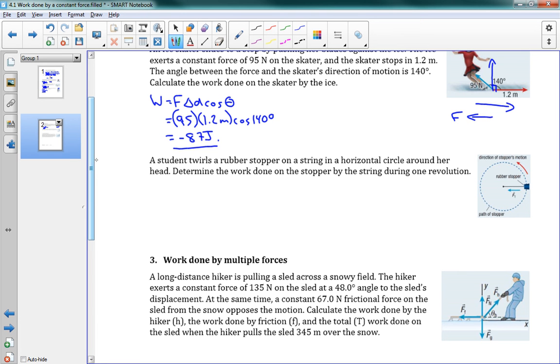Good. And we'll try one more here. A student twirls a rubber stopper on a string in a horizontal circle around her head. Determine the work done on the stopper by the string during one revolution. So take a look at the picture to the right here. We've got a rubber stopper that at this point is moving upwards. And the force is being applied inwards. We have 90 degrees here. Up is the direction of motion. Left is the direction of the force. They're perpendicular.